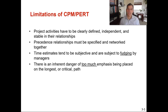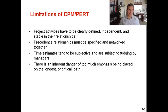Some of the limitations of CPM and PERT: project activities have to be clearly defined, independent, and stable in their relationships. If you're wrong on your estimate for one of those activities, your entire project estimate is wrong as well. So all of the activities have to have really good time and cost estimates, otherwise it's going to be inaccurate. The precedence relationships must also be specified and networked together — you've got to know what is step one, step two, step three, step four. And when you're talking about enormous projects, it's not always straightforward about what steps have to be taken to get to the end goal.